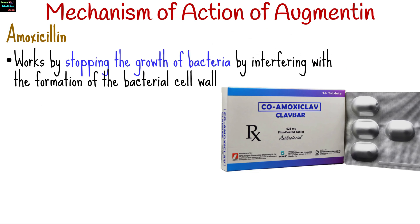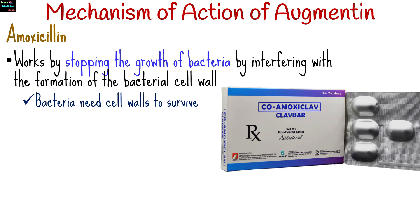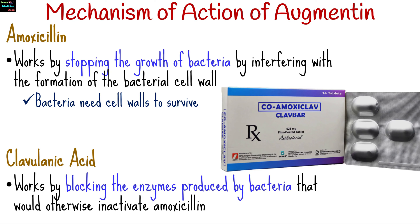Amoxicillin is a penicillin-type antibiotic that works by stopping the growth of bacteria. It does this by interfering with the formation of the bacterial cell wall. Bacteria need cell walls to survive, and by interfering with their production, amoxicillin effectively kills the bacteria or inhibits their growth. Clavulanic acid is a beta-lactamase inhibitor that works by blocking the enzymes produced by bacteria that would otherwise inactivate amoxicillin, thereby allowing the antibiotic to effectively kill the bacteria.